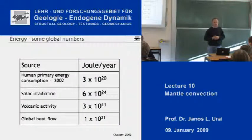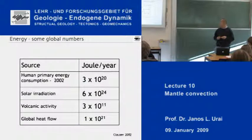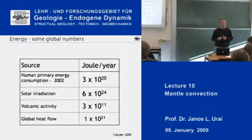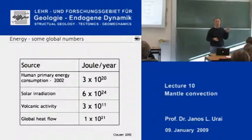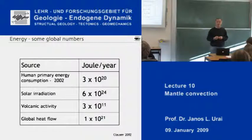Let's recap some numbers about energy. In 2002, humans consumed three times 10 to the 20 joules in a year. The sun is delivering six times 10 to the 24 joules a year to Earth. If we would be able to capture all this solar energy, we would be completely provided with energy — we wouldn't need any other energy source, because 10 to the 24 is much larger than 10 to the 20.